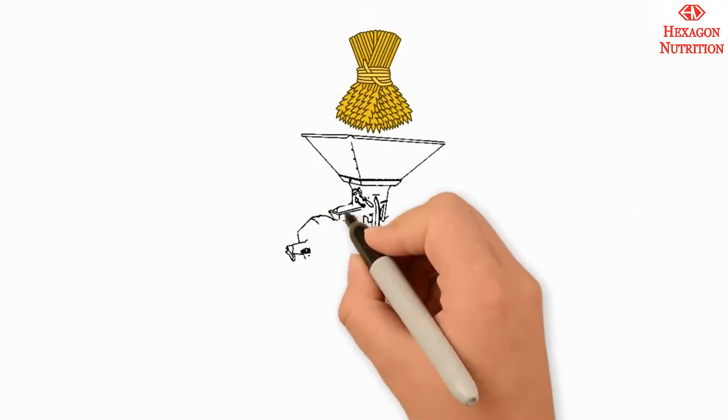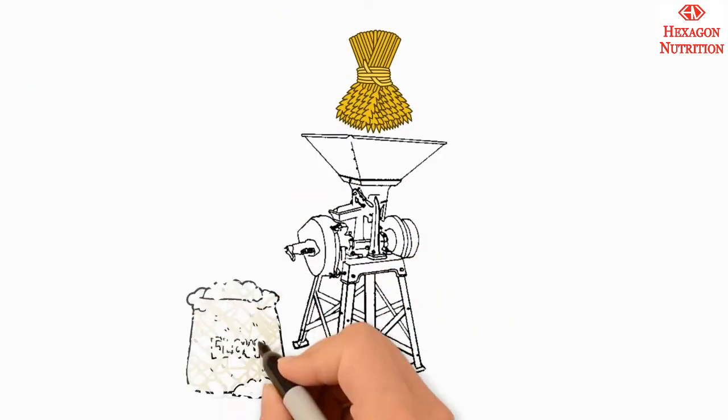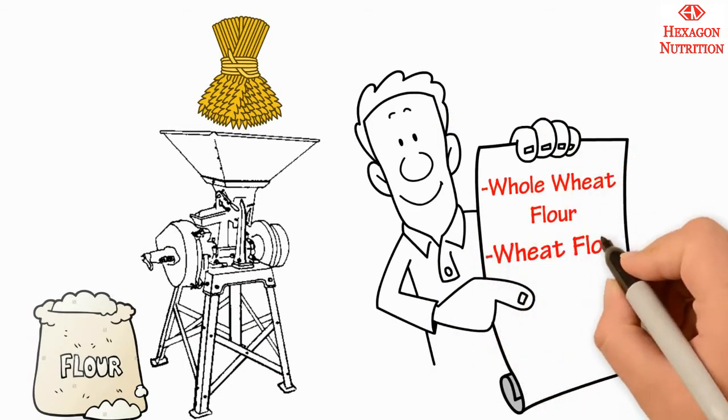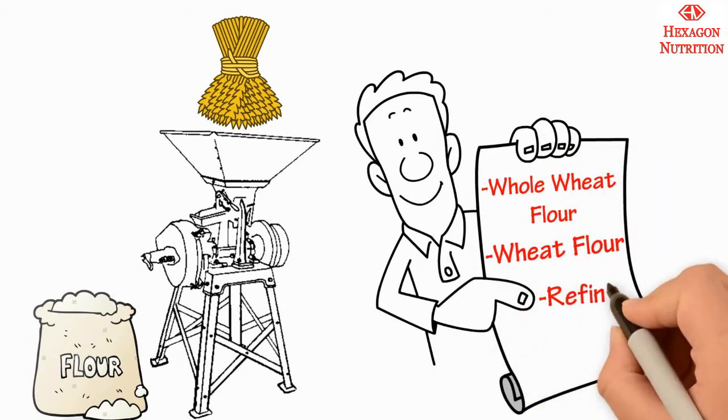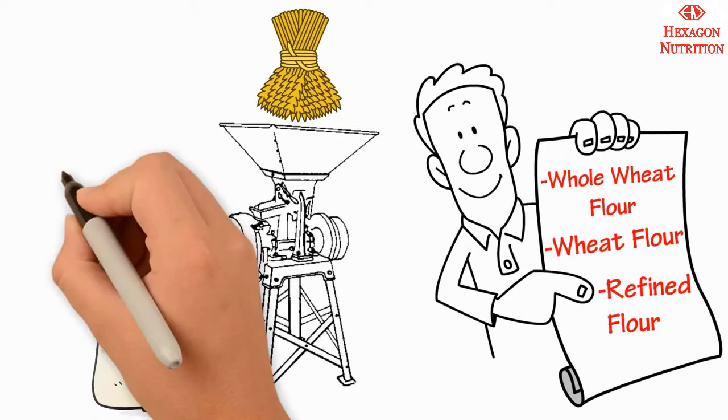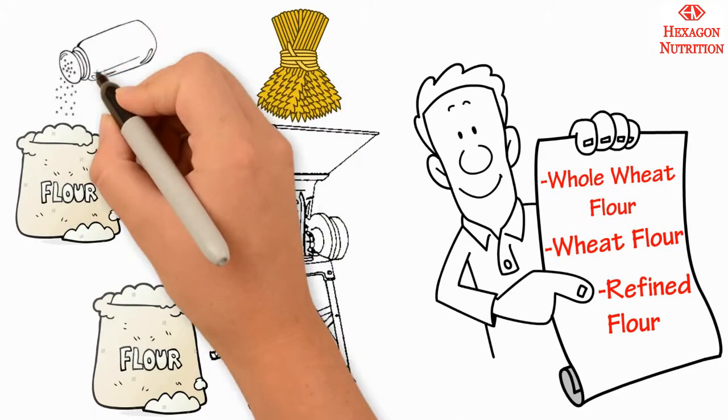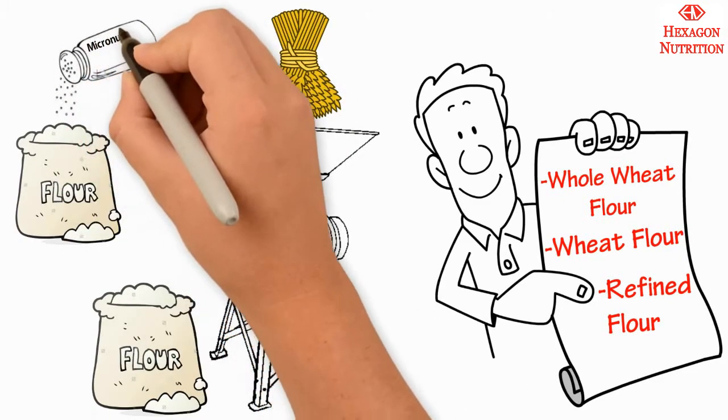The cereal grains further undergo a complex process of milling that converts the grains into end products such as whole grain flour, refined flour, and bran. Micronutrient premixes are generally added toward the end of the milling process when the flour is obtained, as premixes can easily blend with flour than the coarse particles.